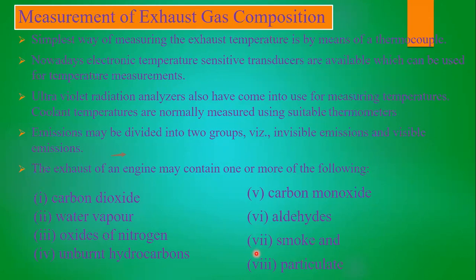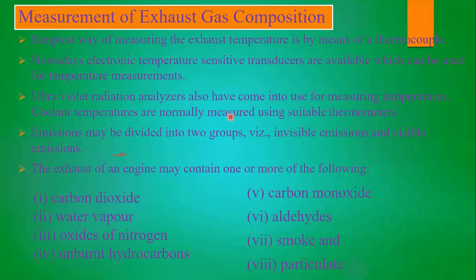Under BS4, some amounts of carbon monoxide, nitrogen oxides, and hydrocarbons were acceptable, but under BS6 these must be very much lower; otherwise the government will not permit the vehicle to run on Indian roads. This is why exhaust gas composition measurement is so important. Equipment such as electronic temperature-sensitive transducers and thermocouples are used to measure exhaust gas temperature.